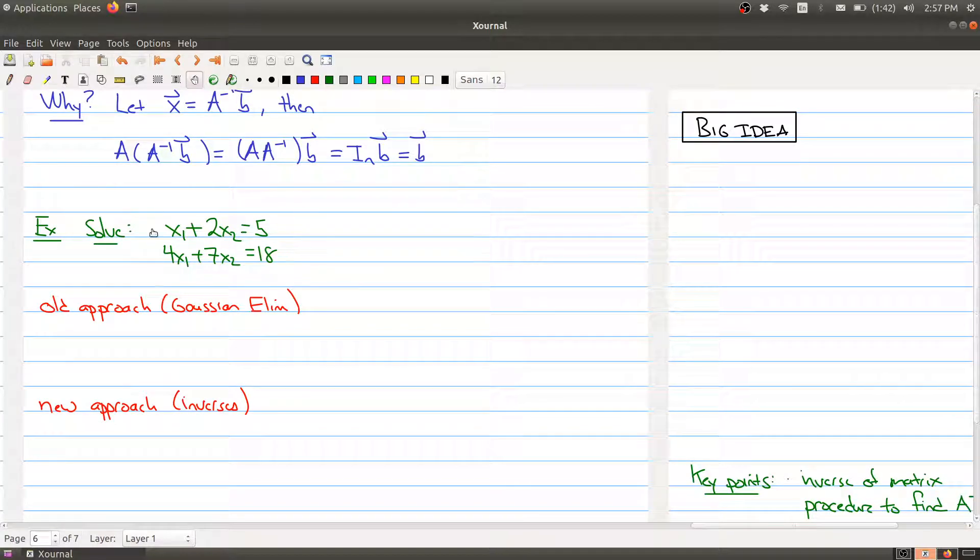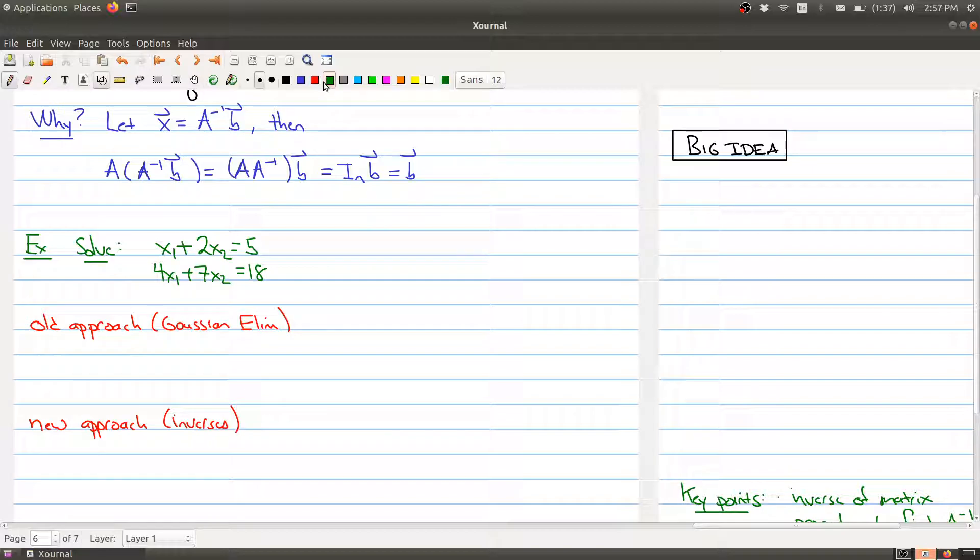Let's go back to a typical problem from the beginning of chapter one. You have a system of linear equations that you want to solve. Now, the first approach that we have would be to use Gaussian elimination. We would take this system and put it into the augmented form. So 1, 2, 4, 7, 5, 18. There is my augmented form.